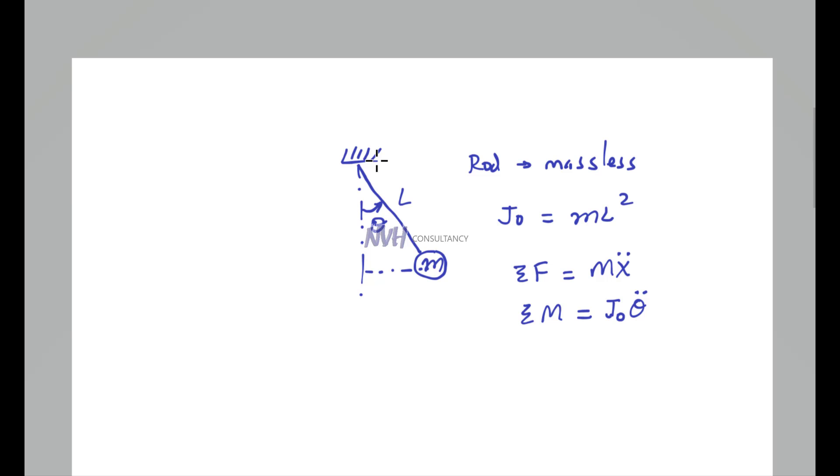This counterclockwise movement of this arm will generate a moment, and the moment will equal the force—that is, the weight of this Bob—times the moment arm, which is distance X. So sum of moments will equal W times X equals J₀θ̈.